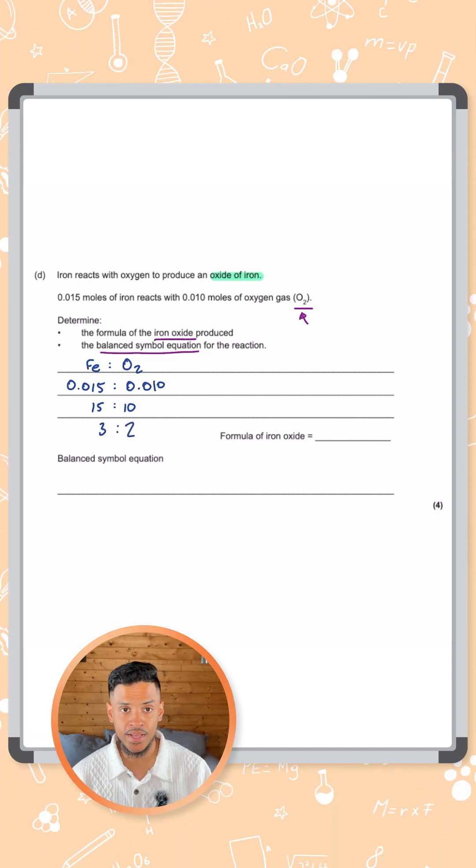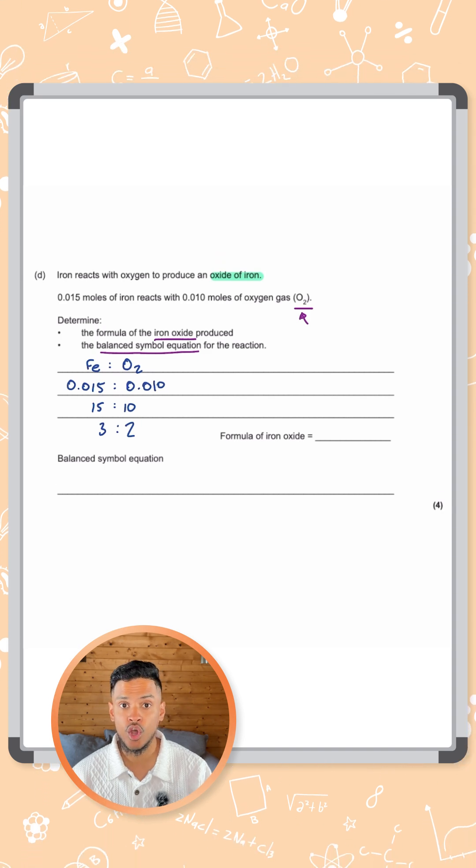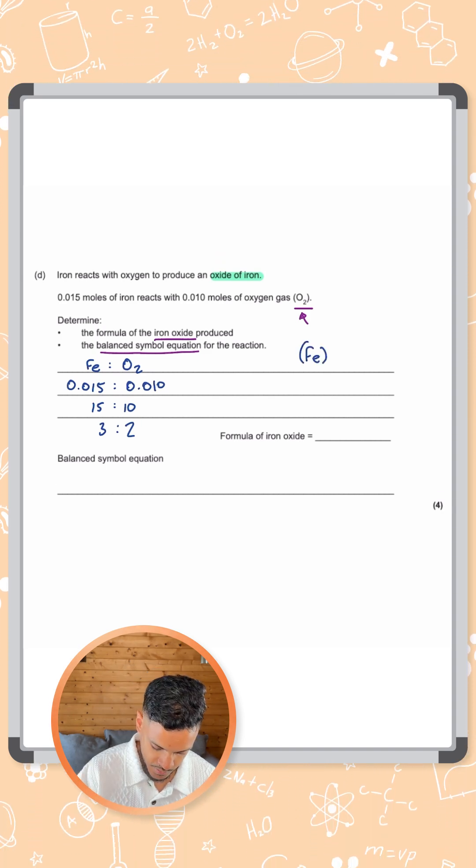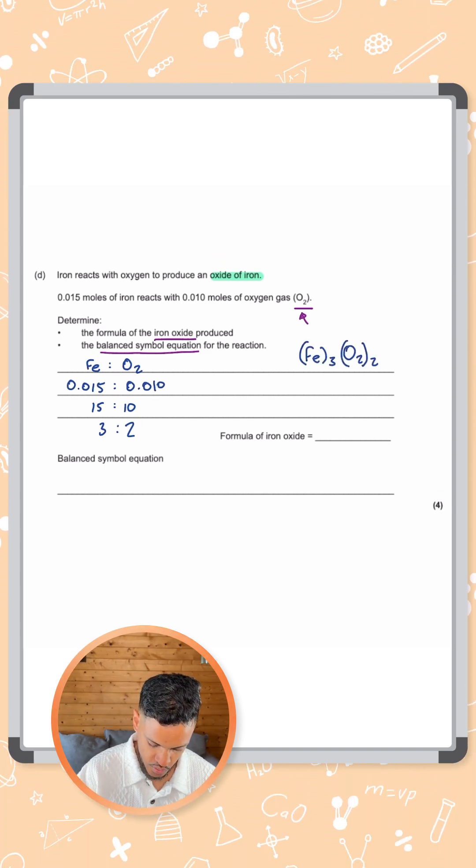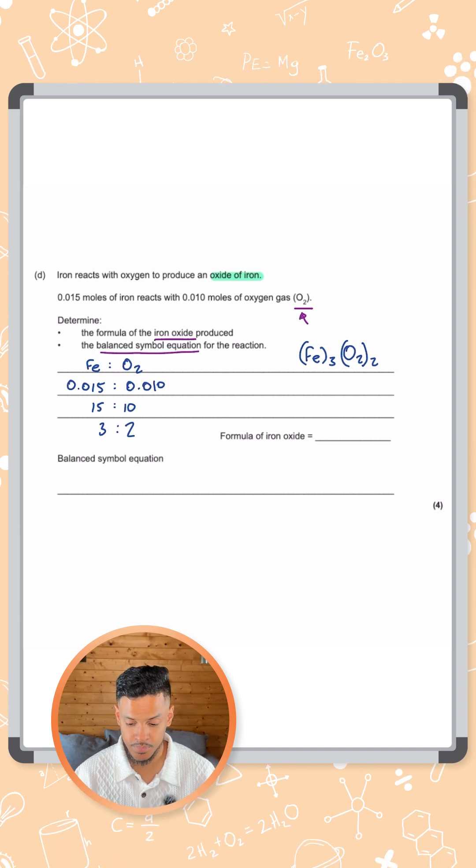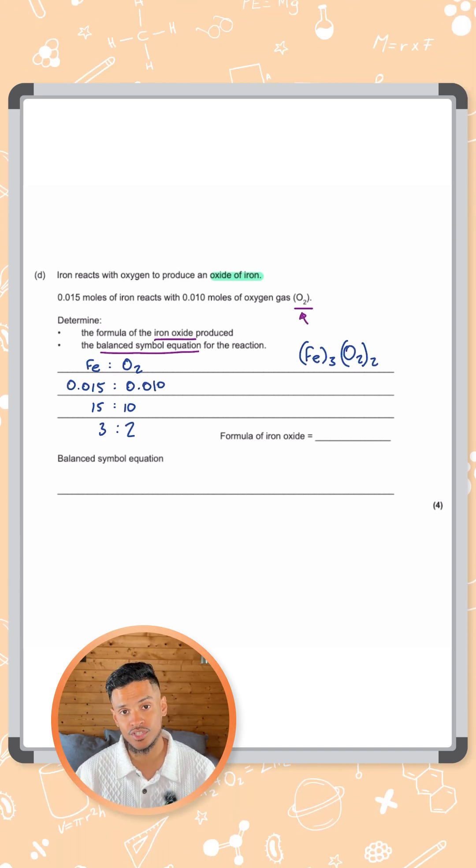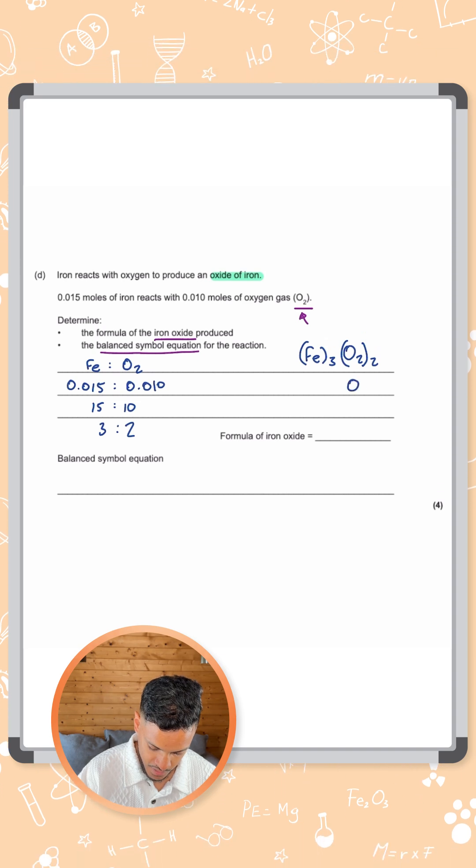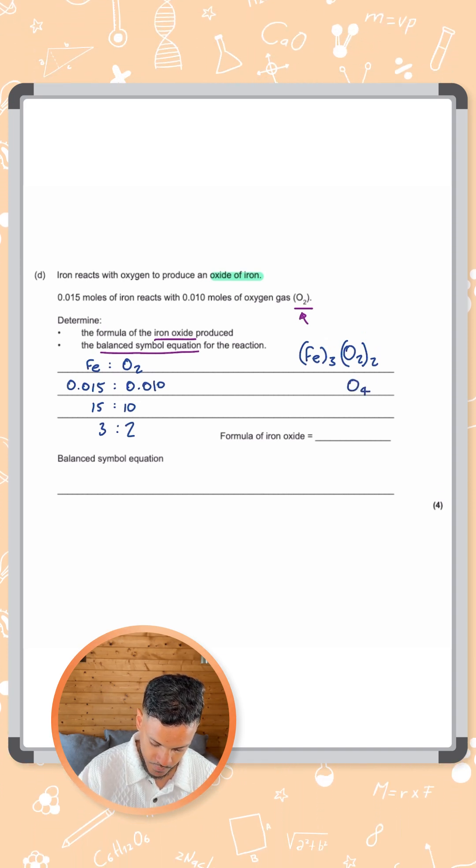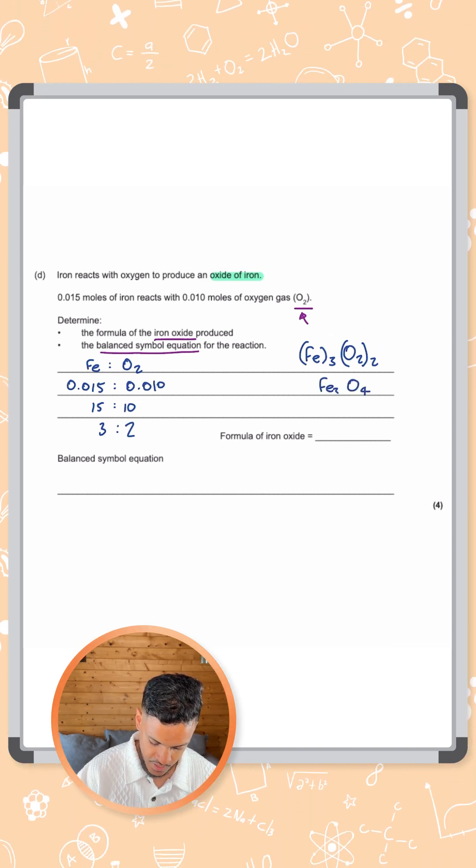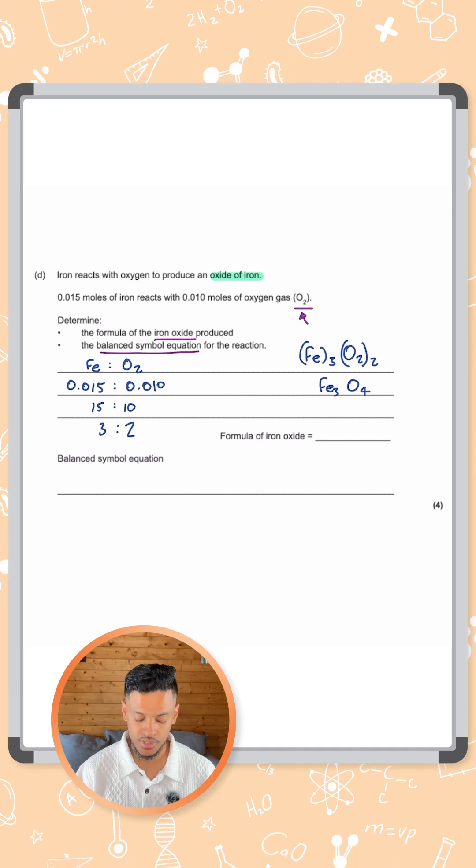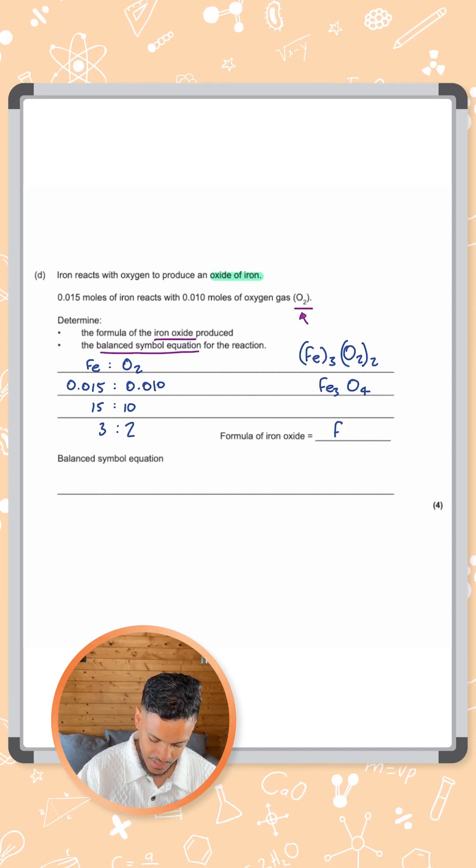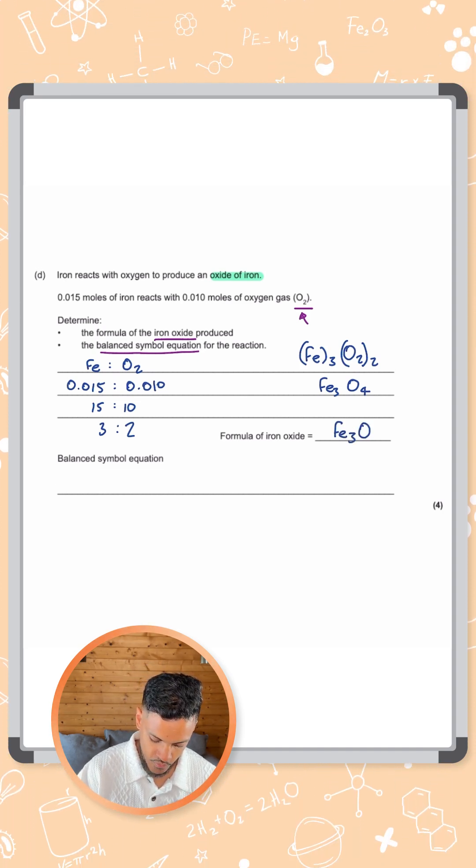So we have a ratio of 3 Fe's and 2 O2's. That's why they specifically said O2 and not oxygen, not O on its own. If we open up the oxygen bracket, that gives us O4 and this gives us Fe3. So the formula of this iron oxide is Fe3O4.